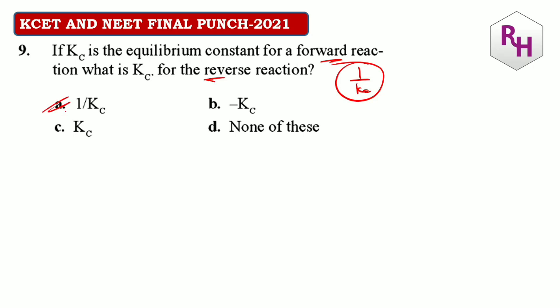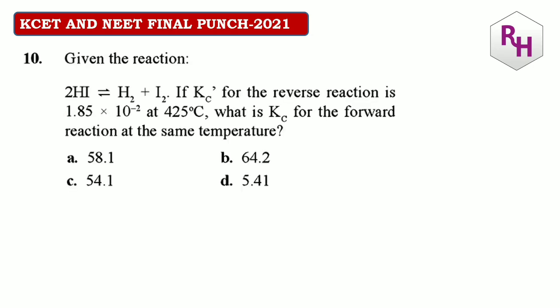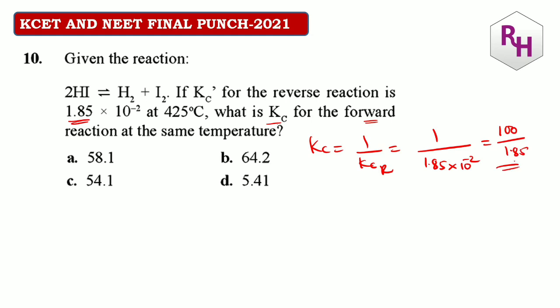If Kc is the equilibrium constant for the forward reaction, then for the backward reaction it is 1/Kc. For the reaction HI → H2 + I2, if Kc for the reverse reaction is 1.85×10⁻², what is Kc for the forward reaction? Kc(forward) = 1/Kc(reverse) = 1/(1.85×10⁻²) = 100/1.85 ≈ 54. The answer is approximately 54.